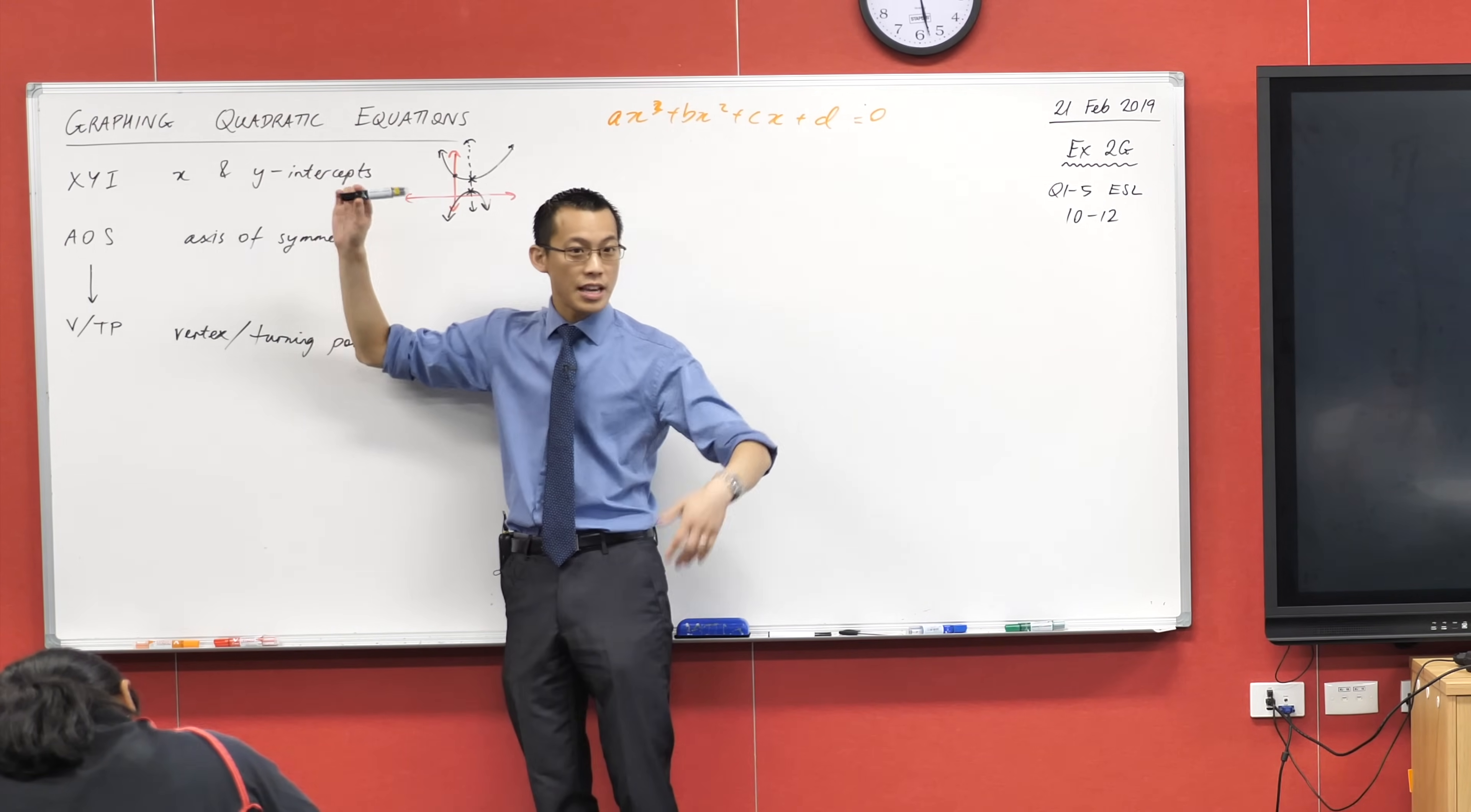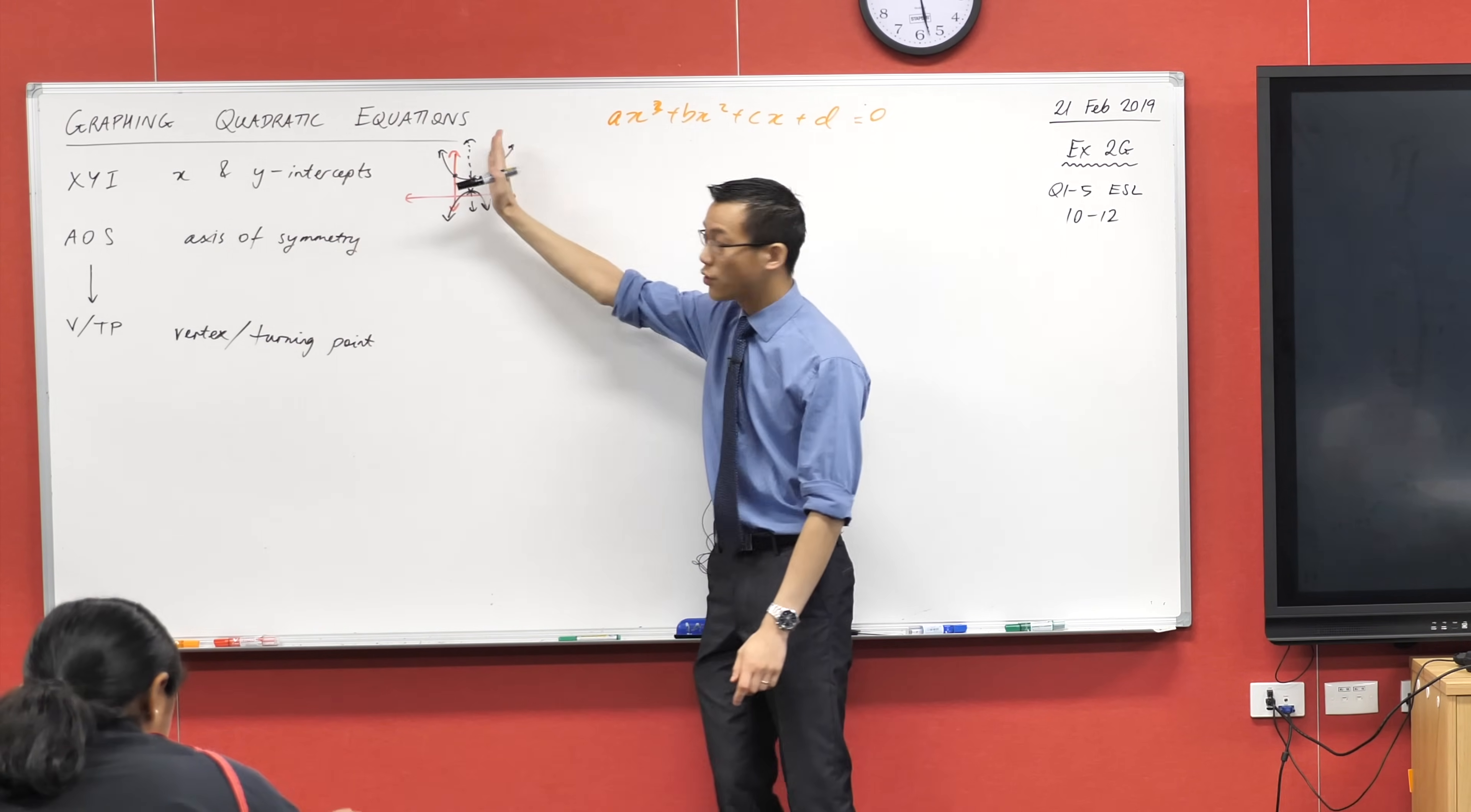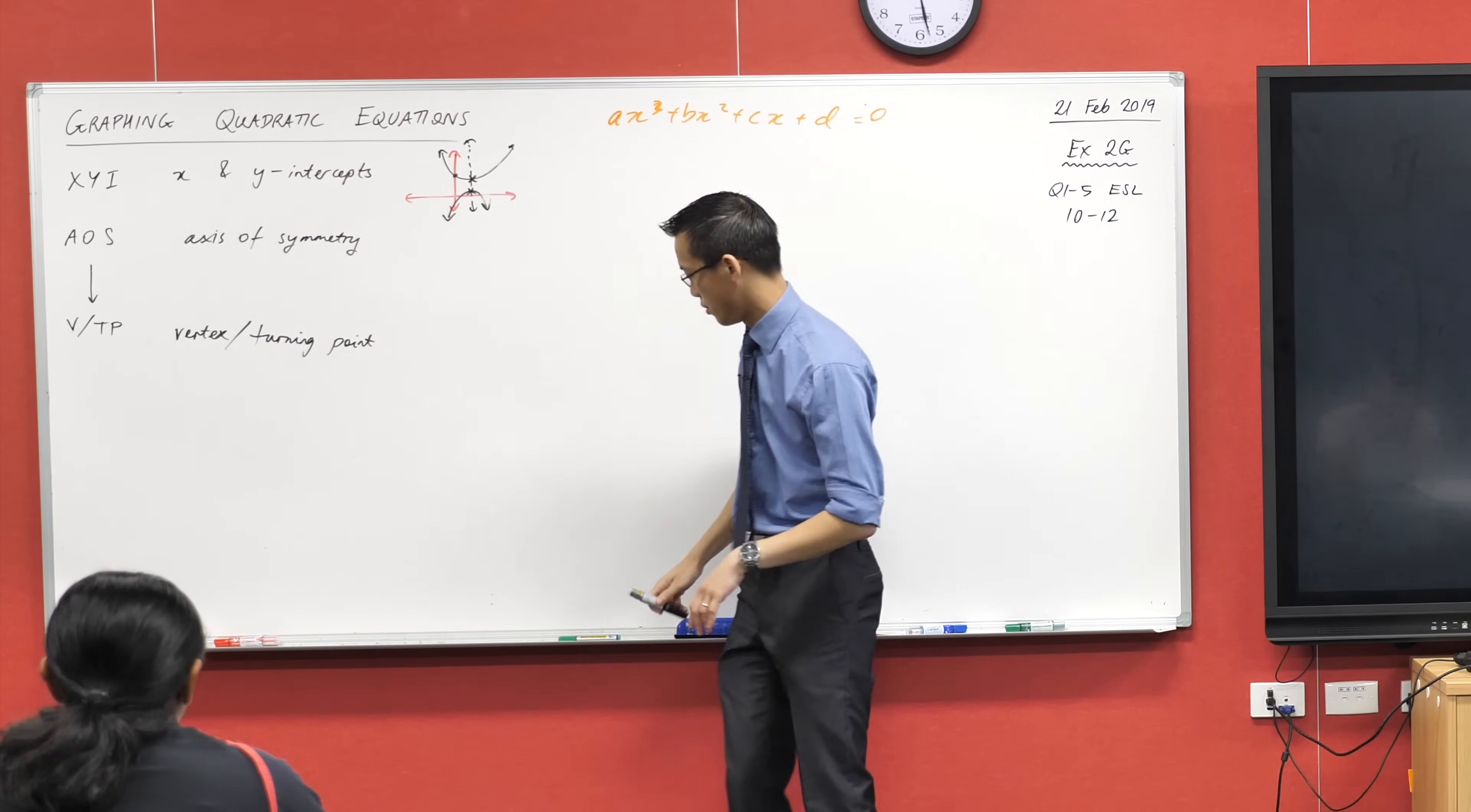We'll find the x and y intercepts as much as we can. Sometimes you can't, so you need to search for the axis of symmetry. Once you've got that axis, you can use it to find the vertex. So let's have a look at how we do this.